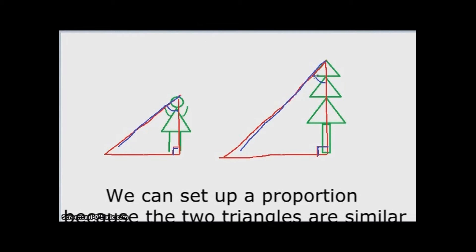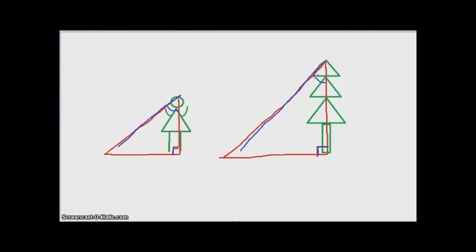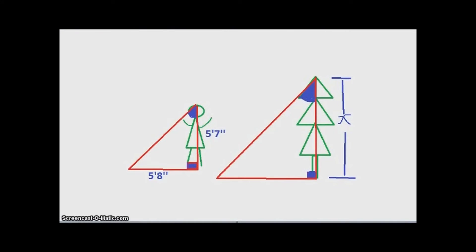Now, let's set up a proportion because these two triangles are similar. Let's set X as the unknown height of the tree from the top to the bottom. We measured Amy's actual height is 5'7" and her shadow is 5'8". We are going to use Amy's actual height over her shadow length equals tree's actual height over tree's shadow length, which is 15 feet.